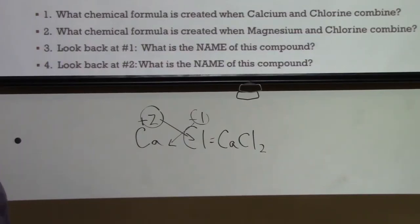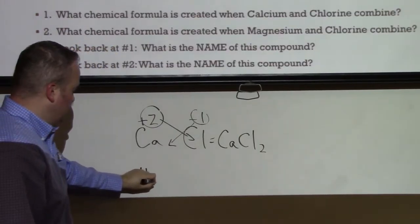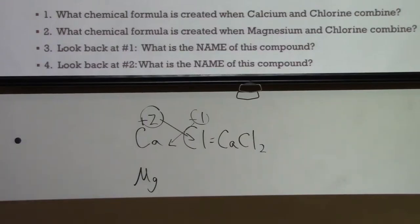And we call that calcium chloride. We don't have to say dye, because what we're working with is an ionic bond, and any time you have a metal and a nonmetal, you don't have to use prefixes to name it. That's only for covalent bonds.